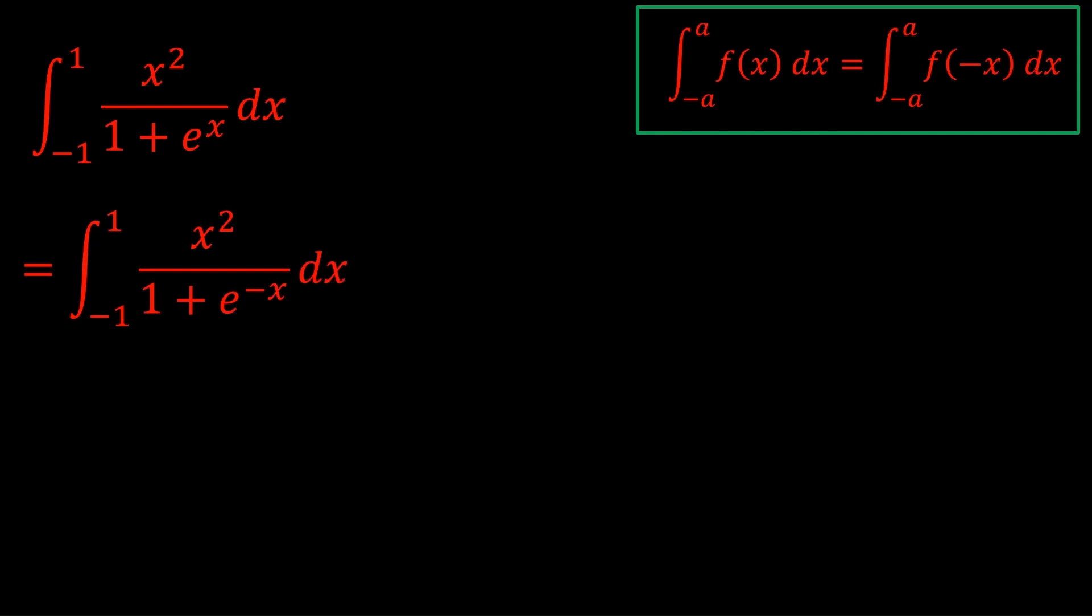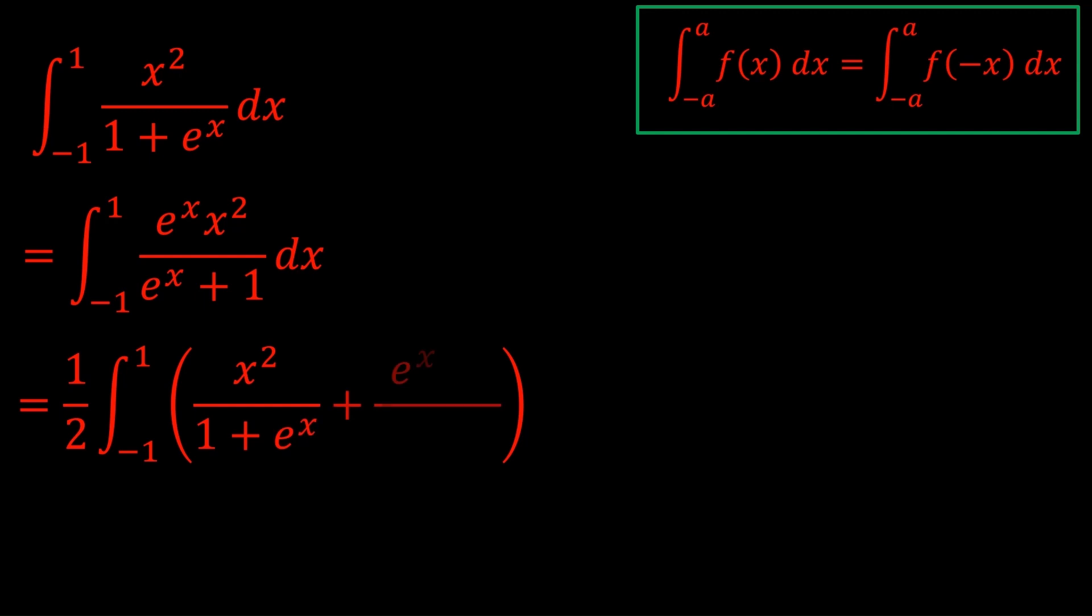When you see an e^(-x), you can consider multiplying and dividing by e^x. And that would give you this. So now we've removed the negative exponent. We have two forms of the same integral. So we add them together and divide by two using the first trick.